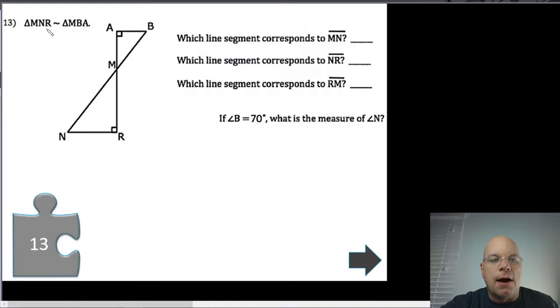Triangle MNR is similar to triangle MBA. This slightly larger triangle and this smaller triangle. Which line segment corresponds to MN? If you understand what we discussed about the similarity statement, you don't even need the picture for this. MN are the first two letters in the similarity statement, and MB are the first two letters for this triangle, so the corresponding side here is MB. We can look at the figure and agree with that also. MN is this hypotenuse, so it should be the hypotenuse of the other right triangle, and it is MB.